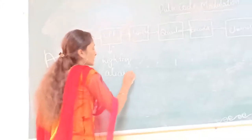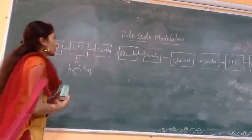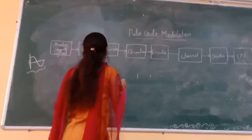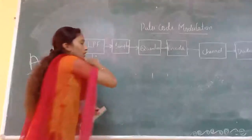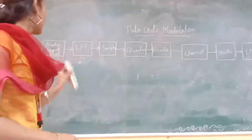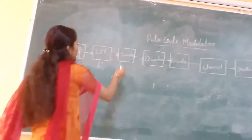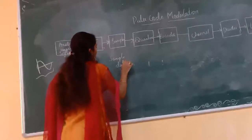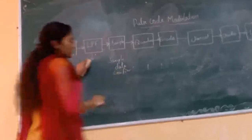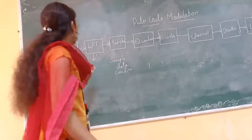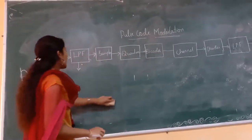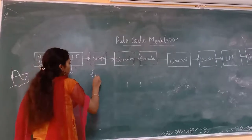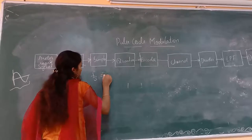This aliasing effect will arise in the sampling technique. The filtered signal is given to the sampler. In this sampler, it collects the input signal coming from the low pass filter. It is used for collecting the sample data and confines the input signal. The sampling rate of the input signal is greater than or equal to twice the message signal frequency.